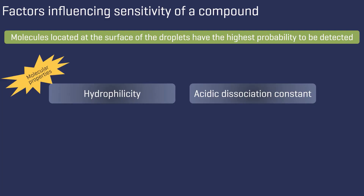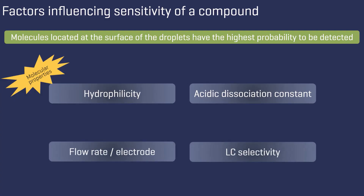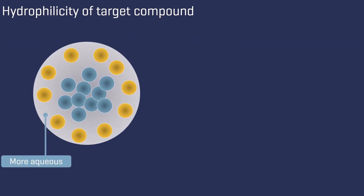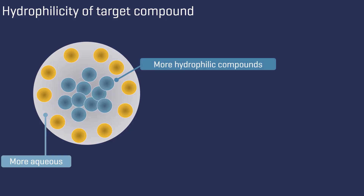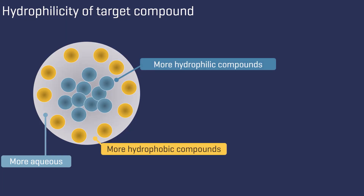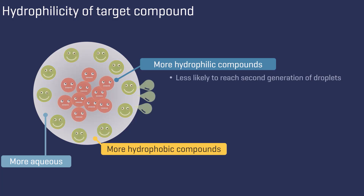Key influences include the molecular properties of the target molecules, in particular their hydrophilicity and acid dissociation constant, but also the flow rate and the LC selectivity can play an important role. Upon further examination of droplets with a more aqueous solvent composition, we can see that more hydrophilic compounds are located in the interior of the droplets, while more hydrophobic compounds tend to reside at the surface. Hydrophilic compounds are less likely to reach the second generation of droplets compared to hydrophobic molecules, resulting in reduced sensitivity for these compounds.